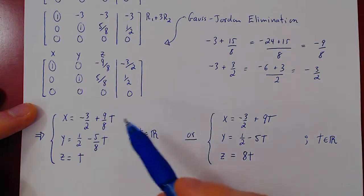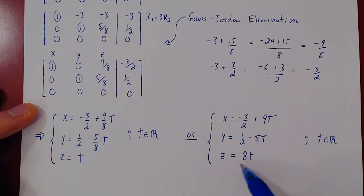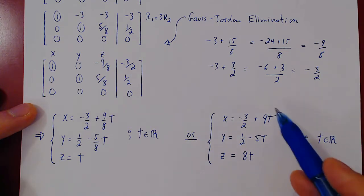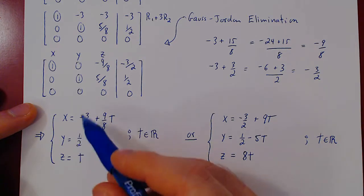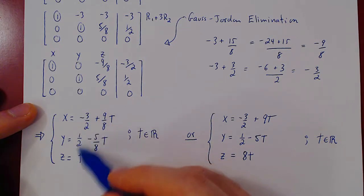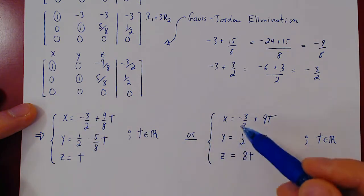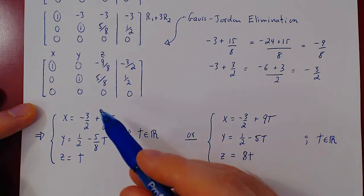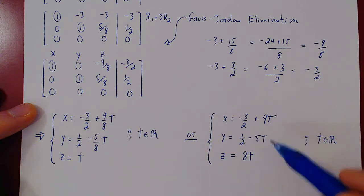So every time you have a parameter being multiplied by a fraction, you can always rescale your parameter so as to get rid of those fractions. Now, if you notice, the constant terms here are fractions, but once you have fractions as constant terms, you cannot get rid of those, you're stuck with them. But a fraction multiplying a parameter can always be cancelled by rescaling your parameter. And that's it.